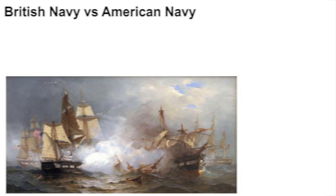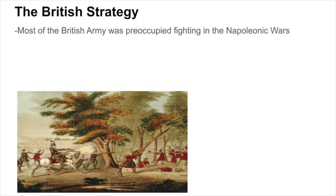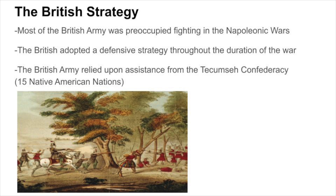Now, at the time, the British Navy vastly outnumbered the American Navy. The American Navy consisted of 18 ships, while the British Navy consisted of over 1,000 ships. Despite this, most of the British Army was off in Europe, busy fighting in the Napoleonic Wars. This caused the British to adopt a defensive strategy throughout the duration of the war. The British Army also relied upon assistance from the Tecumseh Confederacy, a league of 15 Native American nations determined to stop American expansion.